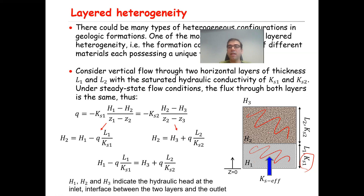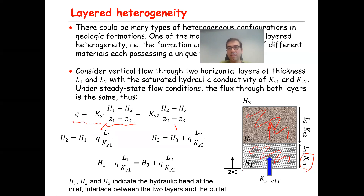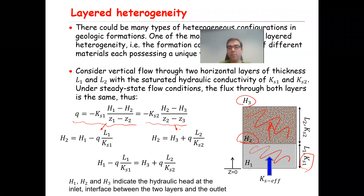The flux through layer one is equal to the flux through layer two, which is equal to the flux through the entire column. From Darcy's law applied to layer one: Q = −Ks1 × (ΔH/ΔZ) = −Ks1 × (H1 − H2)/(Z1 − Z2). Similarly, Darcy's law for layer two gives Q = −Ks2 × (H2 − H3)/(Z2 − Z3). The flux through both layers is the same.